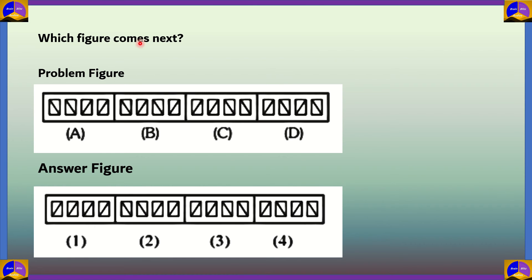First question: which figure comes next? The options are one, two, three, and four. Now for this question, let's look at the problem figure. Each figure has four boxes, so let's draw four boxes and name them P, Q, R, S.